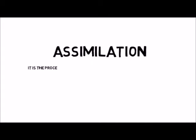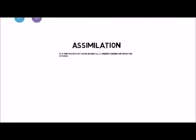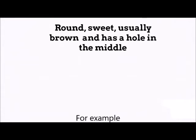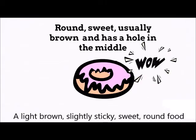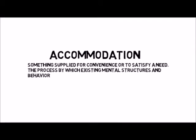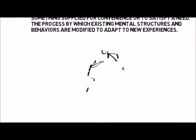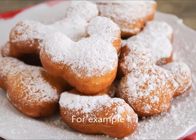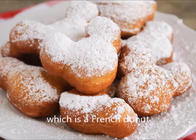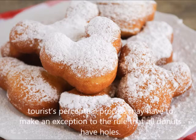Assimilation is a process of taking in and fully understanding information or ideas. For example, a light brown, slightly sticky, sweet, round food with a hole in the middle is easily recognized as a donut. Accommodation is something supplied for convenience or to satisfy a need — the process by which existing mental structures and behaviors are modified to adapt to new experiences. For example, in New Orleans, a tourist may encounter a beignet, which is a French donut, because the beignet does not have a hole. The tourist's perceptual process may have to make an exception to the rule that all donuts have holes.